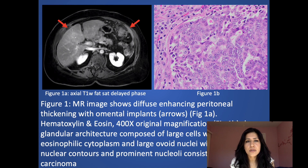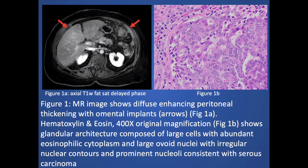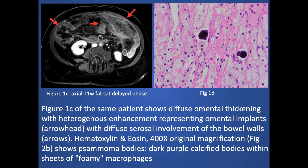I'm showing the correlation of findings between MR and pathological findings. On the MR, there is diffuse enhancement of the peritoneum with thickening and omental implants. The pathological picture shows large cells with large ovoid nuclei and irregular contour, consistent with serous carcinoma. The same patient also shows diffuse omental thickening with heterogeneous enhancement, consistent with omental implants. On the pathological picture, you can see the psammoma bodies.